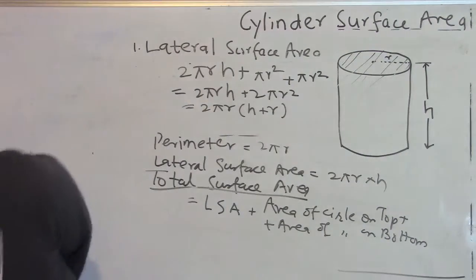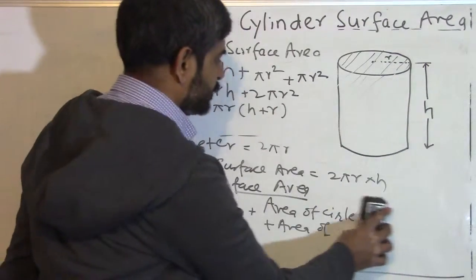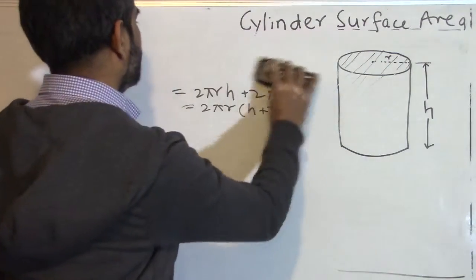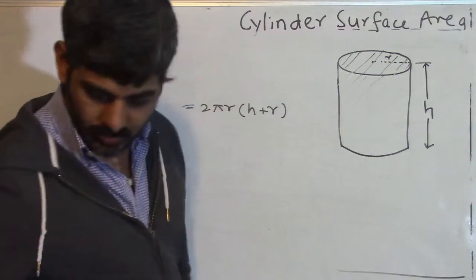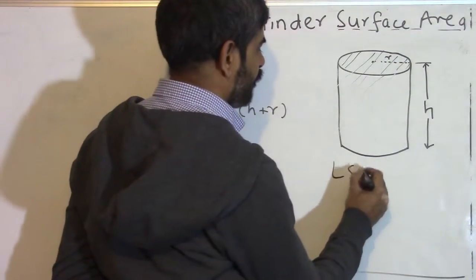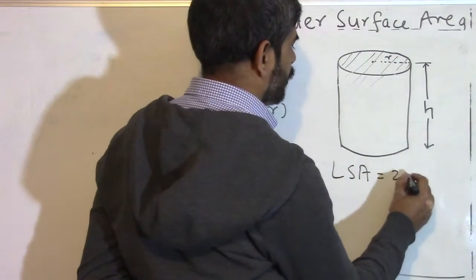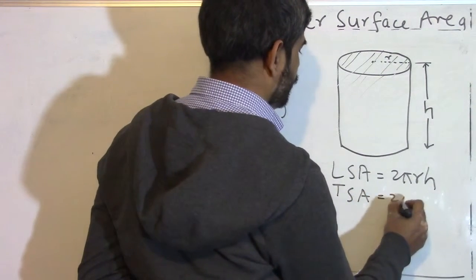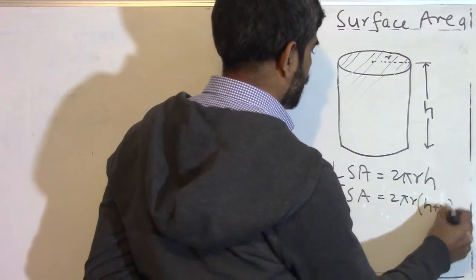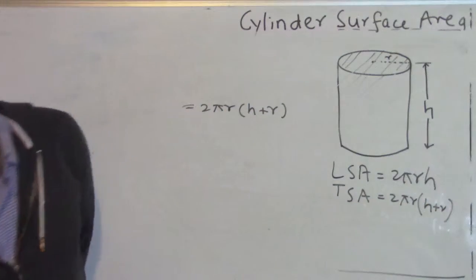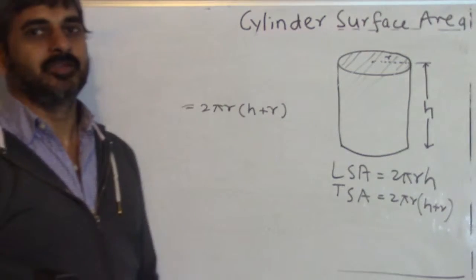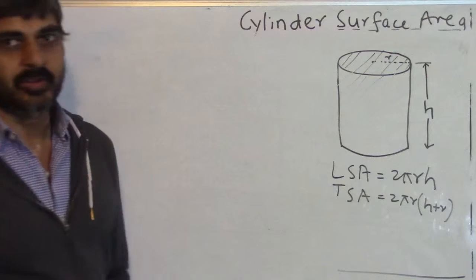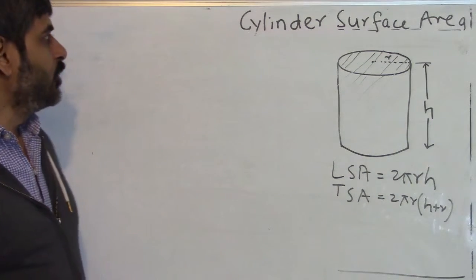To summarize, we have two formulas: lateral surface area = 2πrh, and total surface area = 2πr(h + r). Again, you do not need to memorize these formulas. If you are doing lots of problems and memorize them that way, it is a different thing. Let us do a few questions.